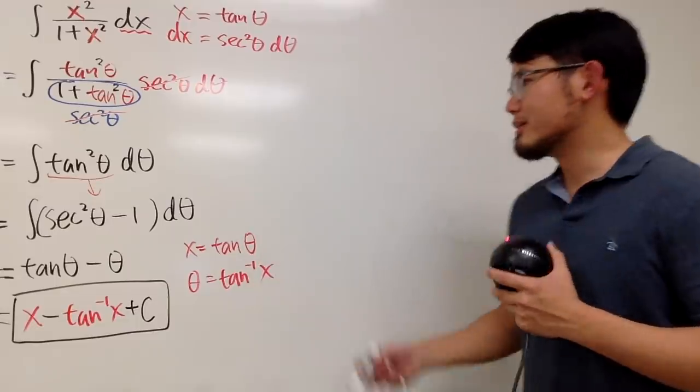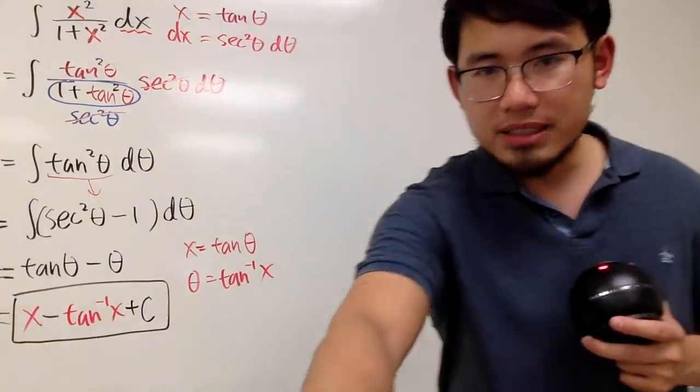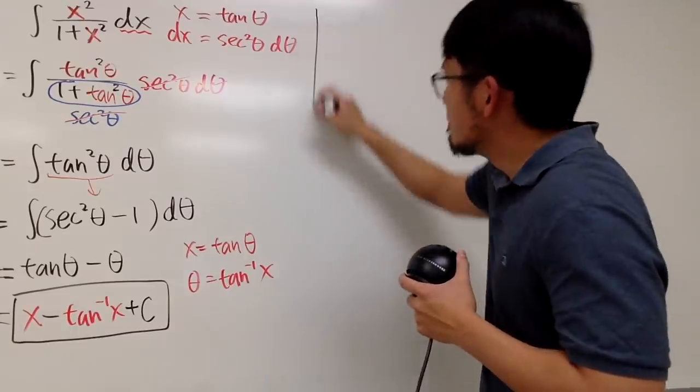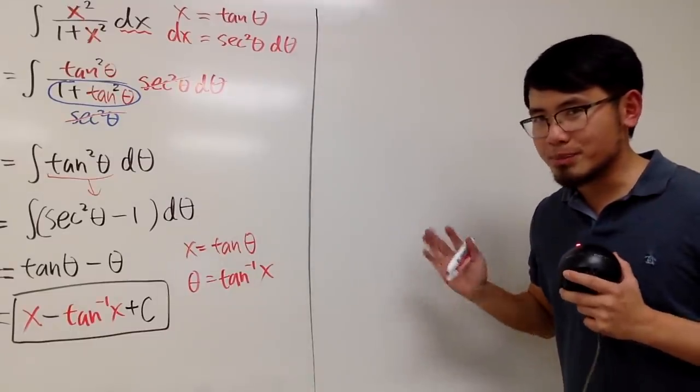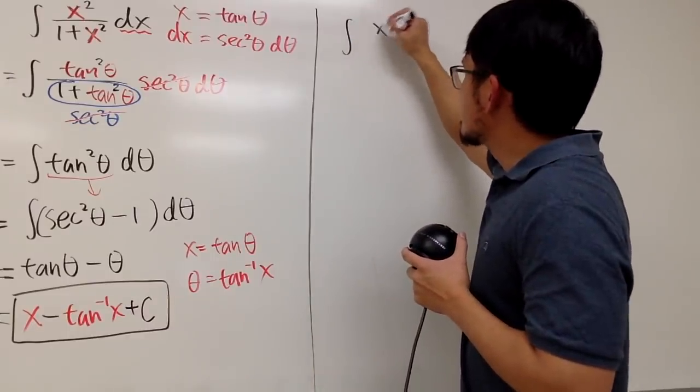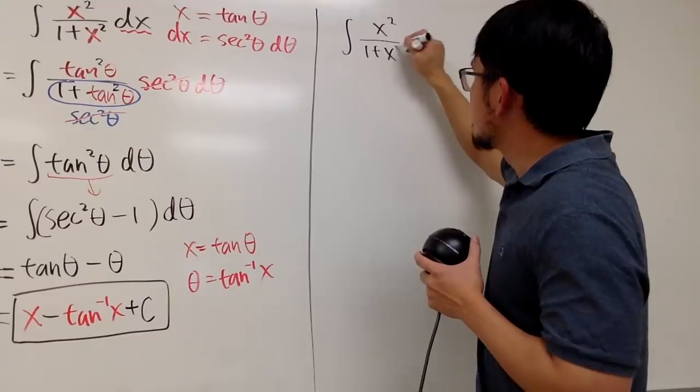So it took us some time to do it. It's not that bad. Let's see. It took us about 3 minutes and 30 seconds. But let me show you guys another way. This way, it's going to be much more powerful. Let's take a look at the integral of x squared over 1 plus x squared again.